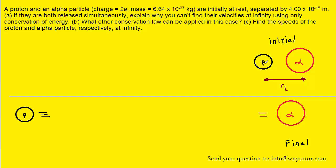Initially, we have a proton and an alpha particle that are separated by the distance stated in the question, and then they are released, they fly apart from one another, and they end up with some final velocity, and they're also very, very far apart in the final scenario.